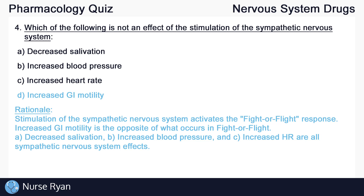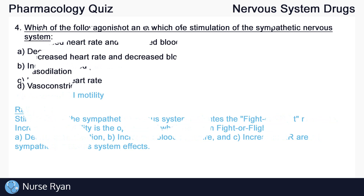Stimulation of the sympathetic nervous system activates the fight or flight response. Increased GI motility is the opposite of what occurs in fight or flight. However, A, decreased salivation, B, increased blood pressure, and C, increased heart rate are all sympathetic nervous system effects.